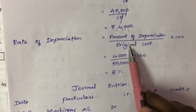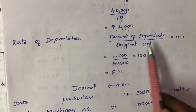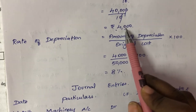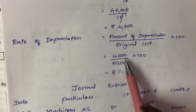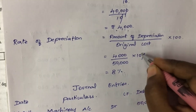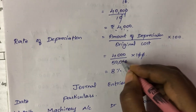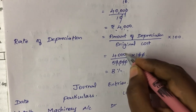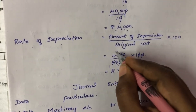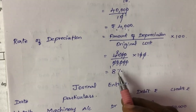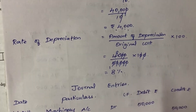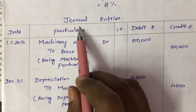Now we need to find the rate of depreciation. Rate of depreciation equals amount of depreciation divided by original cost, multiplied by 100. So 4,000 divided by 50,000 into 100. Cancelling zeros, the rate of depreciation is 8%.